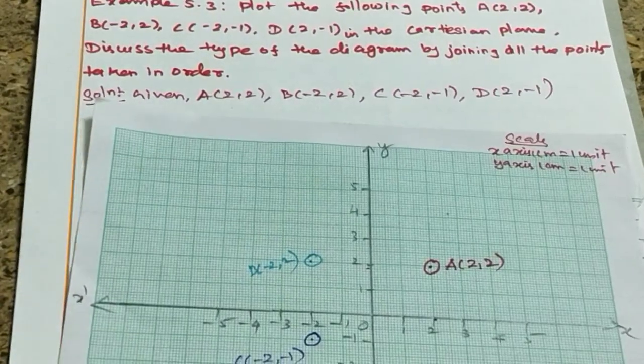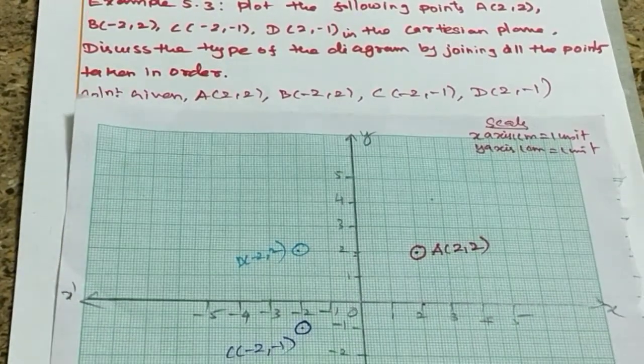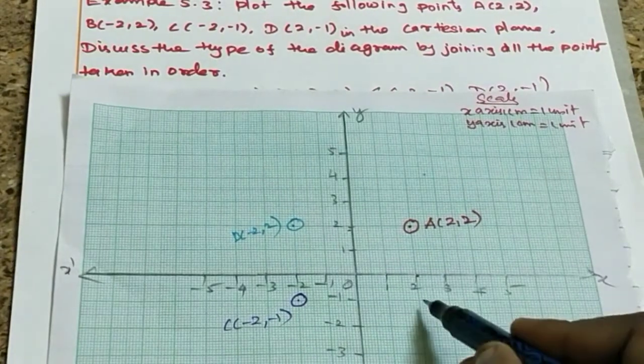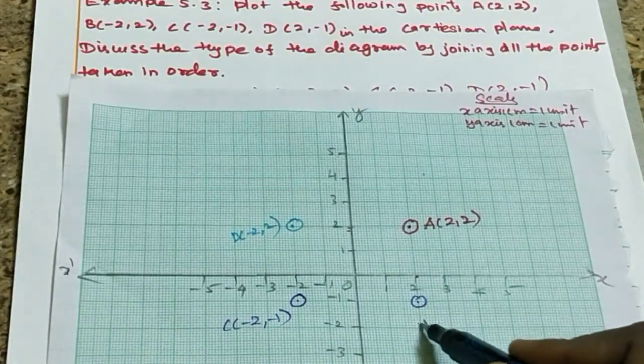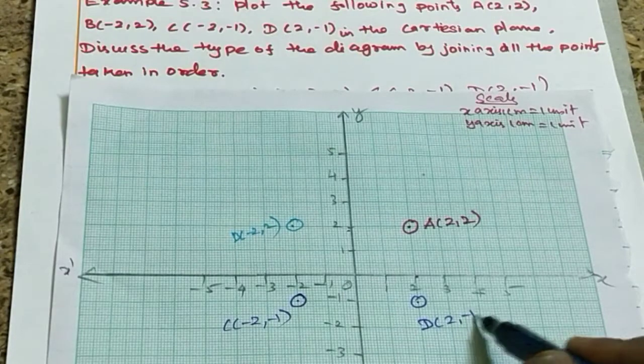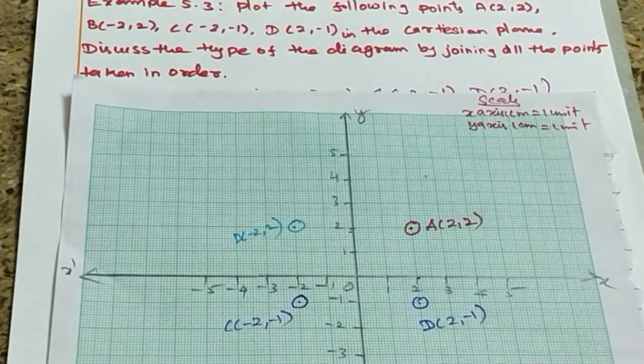So the last point is D value, 2, minus 1. So 2, minus 1 is here, that is the fourth quadrant.